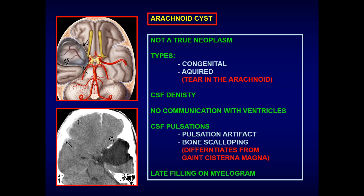The arachnoid cyst is not a true neoplasm — it is an entirely benign entity, either congenital or acquired related to a tear in the arachnoid lining. It is a confined arachnoid-lined CSF cyst collection with no communication with the ventricles. The most common locations are the CP angles or the middle cranial fossa. It follows CSF intensity on all sequences, which differentiates it from epidermoid cyst.